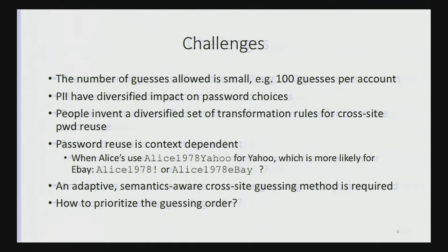Therefore, in order to make this kind of online guessing attack work, we need a semantics rule — a grammar. We need a semantics-aware guessing method, and this method should be adaptive. In summary, a key technical question is how to prioritize the guessing order within the small number of guesses allowed. That's the essential technical question we are addressing.